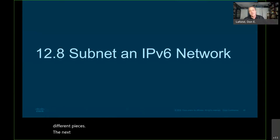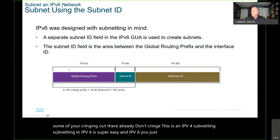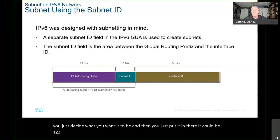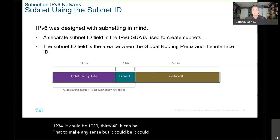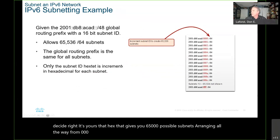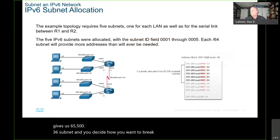Now let's talk about subnetting. Don't cringe — this isn't IPv4 subnetting. Subnetting in IPv6 is super easy. You take the fourth hex tet — the 16 bits just before the interface ID — and you just decide what you want it to be. It could be 1, 2, 3, 4, or A, B, C, D — you decide. That one hex tet gives you 65,536 possible subnets, ranging from 0000 all the way up to FFFF. You decide how you want to break that up.